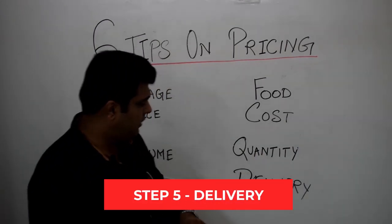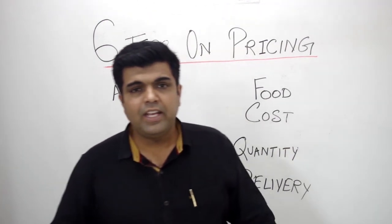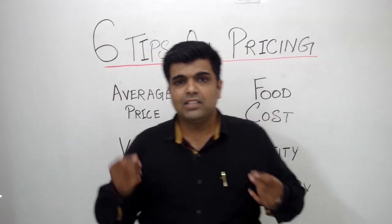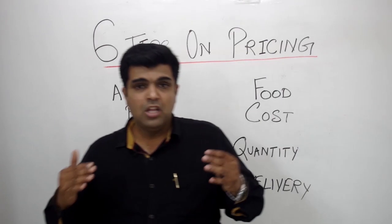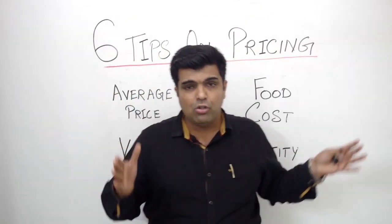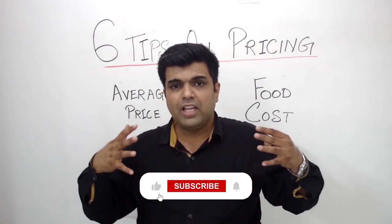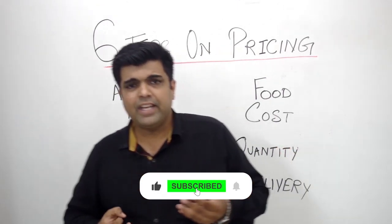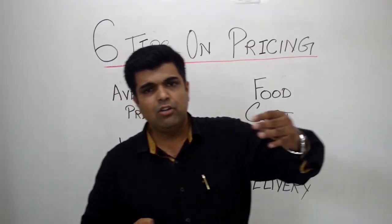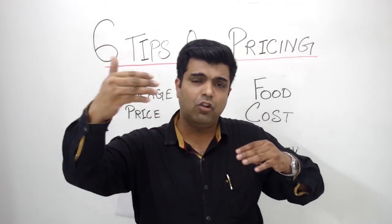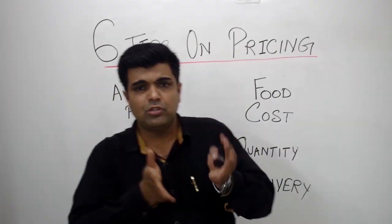The fifth thing is delivery. What is the mode of delivery? Are you home delivering via aggregators like Zomato and Swiggy? Then it's going to cost more because you have to add their commissions into the cost. Or are the customers going to come and pick it up themselves? Then you should keep it reasonable. If you're serving it to their houses, it has to be a little higher.